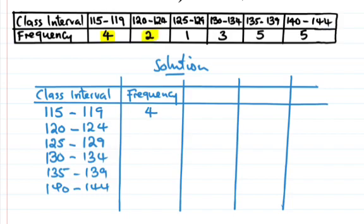120 to 124 has frequency 2. 125 to 129 has frequency 1. 130 to 134 has frequency 3. 135 to 139 has frequency 5. And 140 to 144 has frequency 5. Now let's find the midpoint.